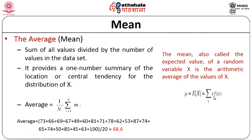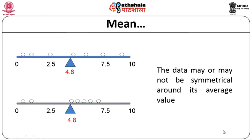Taking two examples both with an average of 4.8: in the first scenario, the data on the left-hand side and right-hand side are almost equal — spread symmetrically. But in the second scenario, though the average is in the middle, we may find fewer data spread on the left-hand side and more on the right-hand side. This means the data we are considering may or may not be symmetrical around its average value.